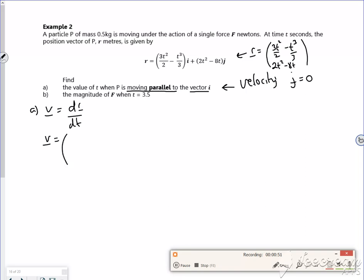So if I differentiate 3t squared over 2 that becomes a 3t. If I differentiate minus t cubed over 3 it becomes minus t squared. Then 2t squared becomes 4t and then minus 8t becomes minus 8. So that's my velocity in terms of time too.